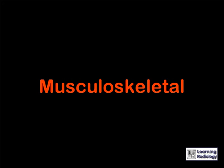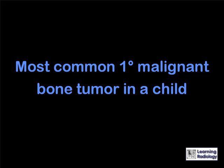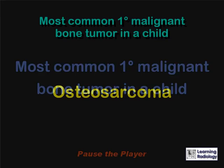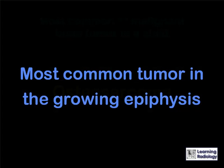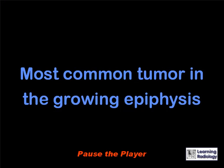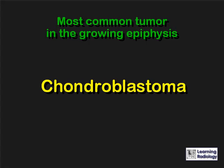Let's get started. Musculoskeletal. What is the most common primary malignant bone tumor in a child? Osteosarcoma. What is the most common tumor in the growing epiphysis? Chondroblastoma.